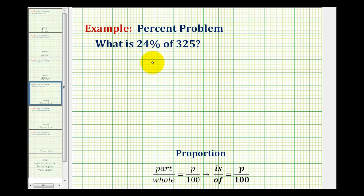In this video, we'll solve the first of the three types of basic percent problems using the percent proportion. In order to write the percent proportion, if we're given the percent in the problem, we'll drop the percent sign and write it as a fraction with a denominator of 100, as we see here.